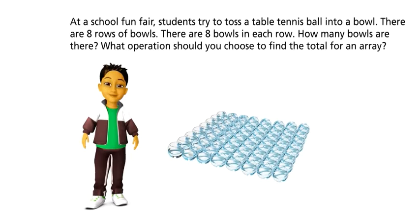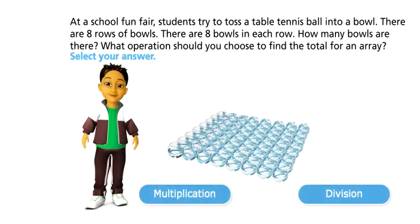At a school fun fair, students try to toss a table tennis ball into a bowl. There are eight rows of bowls. There are eight bowls in each row. How many bowls are there? What operation should you choose to find the total for an array? Select your answer.